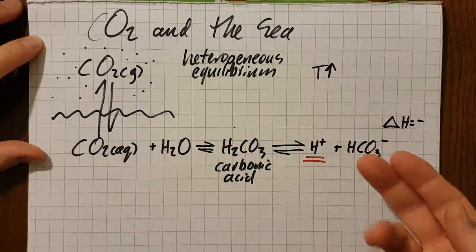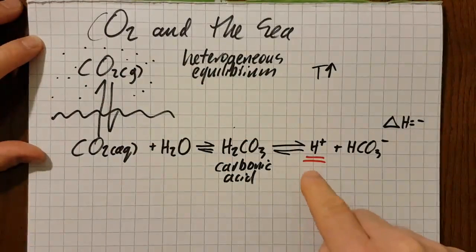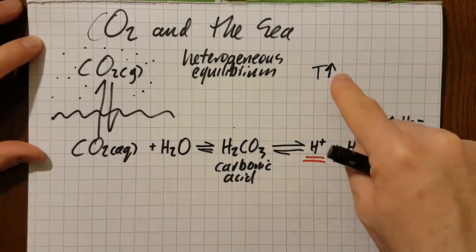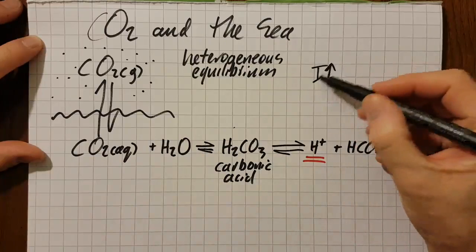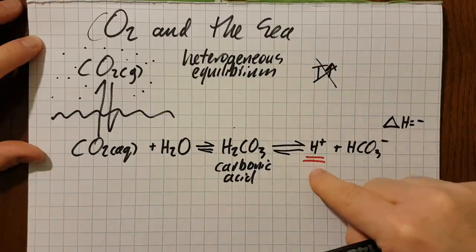But as you heat it up, it's going to favor the endothermic side and go back again, removing the acid. Now on balance, the seas are becoming more acidic. So the temperature aspect is actually quite minimal in this process of acidity.